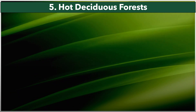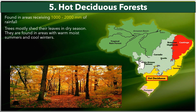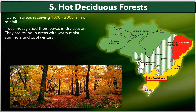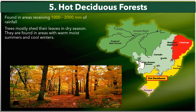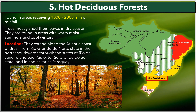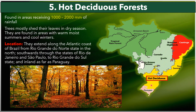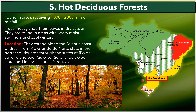The fifth type is hot deciduous forest, found in areas receiving 1000 to 2000 millimeters of rainfall. Trees mostly shed their leaves in the dry season to avoid loss of water. They are found in areas with warm moist summers and cool winters. Their location extends along the Atlantic coast of Brazil from Rio Grande in the north, southward through the states of Rio de Janeiro and São Paulo to Rio Grande do Sul in the south, and inland as far as Paraguay.